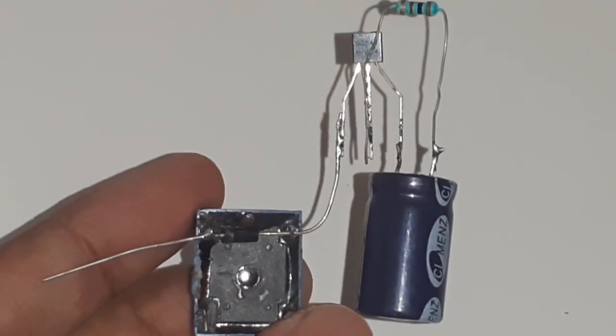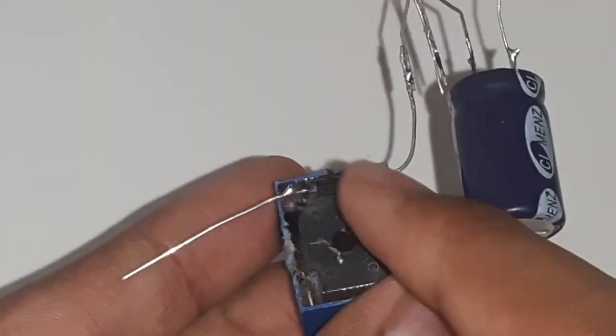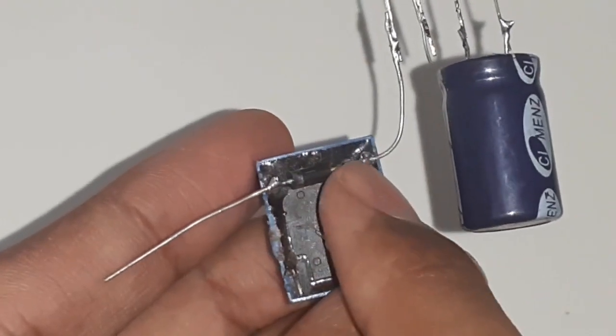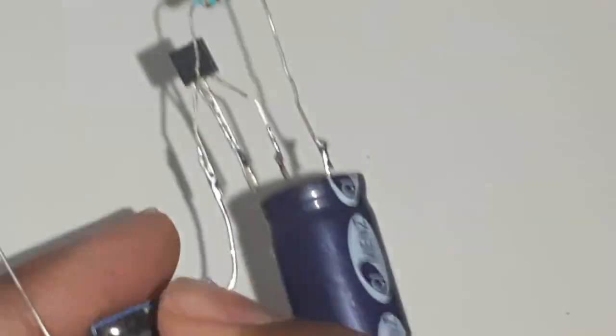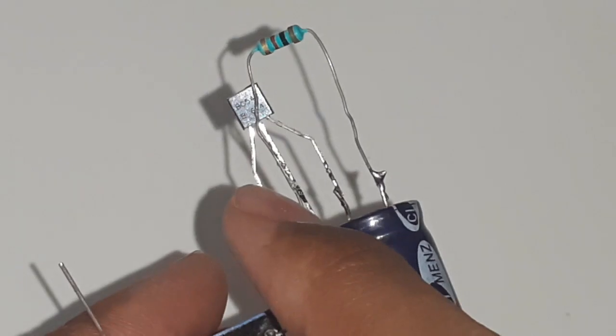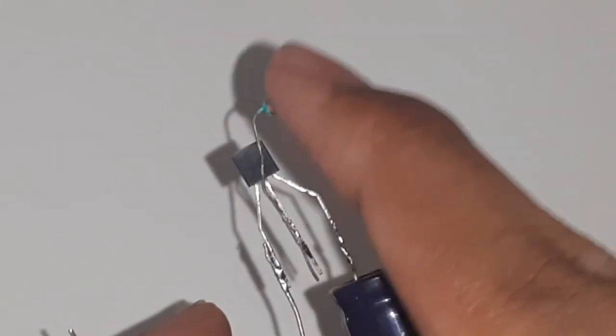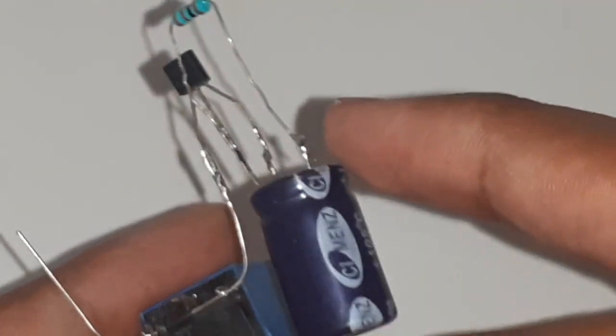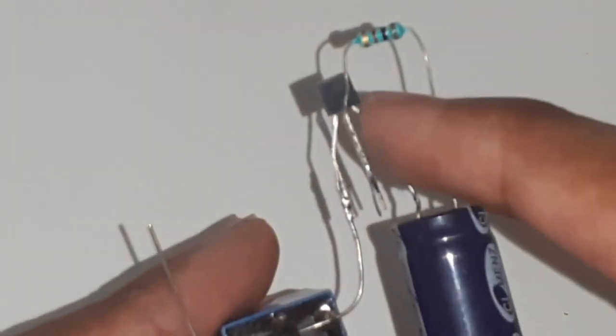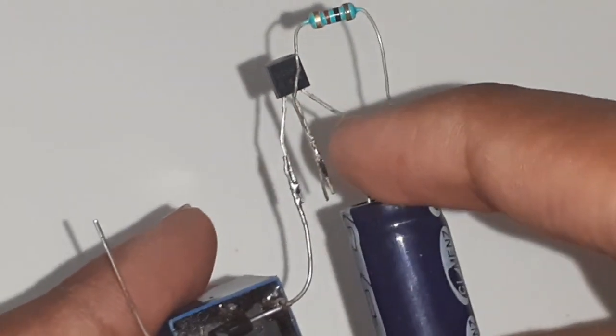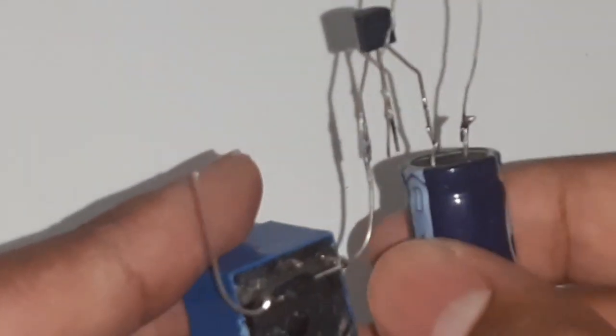This is how it should look like. The relay has been connected with the diode. The positive pin goes this side. Then the negative one is connected to the collector of the transistor. Then the base is connected with the resistor which is connected to the positive of the capacitor. And the emitter pin of the transistor is connected with the negative leg of the capacitor.